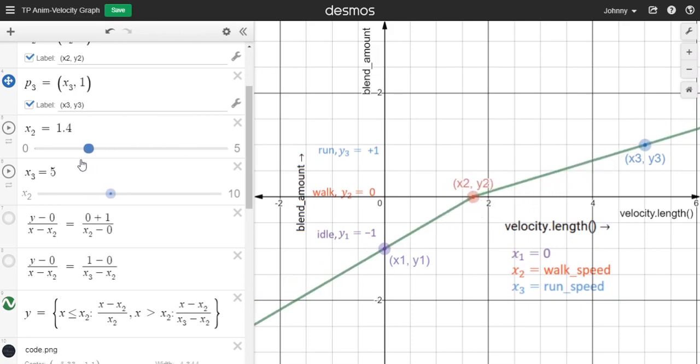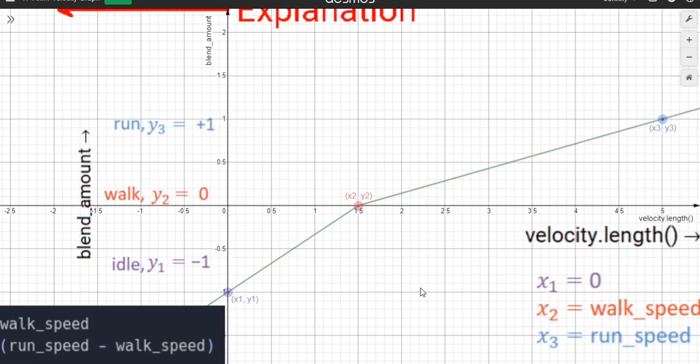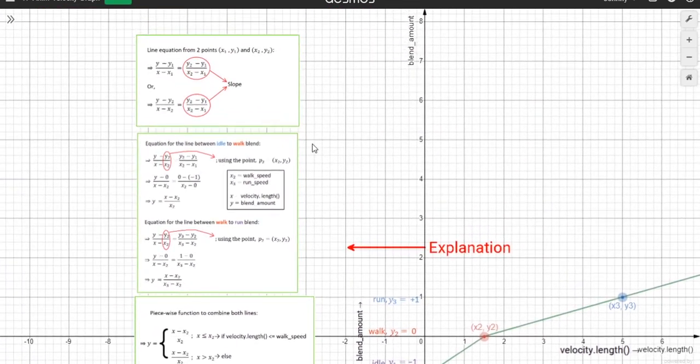So it doesn't matter whatever the run speed or walk speed is, I'll always get a nice linear blend of the idle-walk-run animation, which depends on the idle-walk-run velocity. I provided an explanation of the whole thing over here.